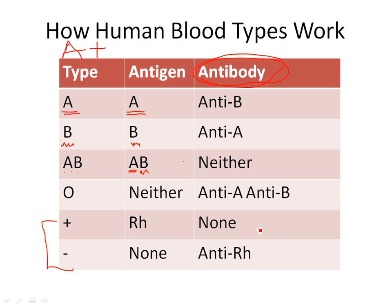A blood type AB — if you're AB, you have both antigens, which means you don't make either antibody. If you have the antigen, that's considered normal, and you're not going to attack something that's normal. Someone whose blood type is O doesn't have any antigen, so A and B are both considered foreign, and they'll make antibodies against both of them.